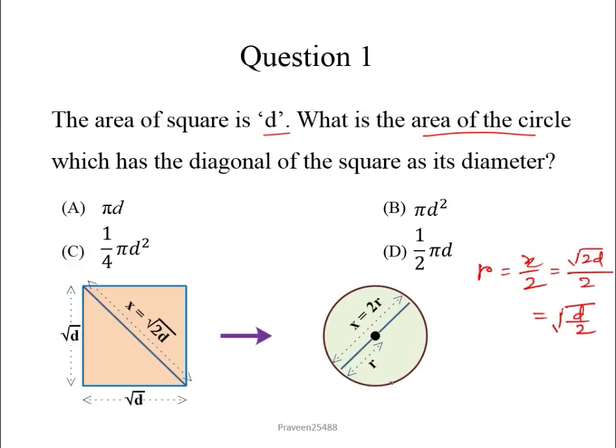It is asking the area of the circle. Area of circle is pi r squared. On putting the value of r here we can get our answer which is pi d upon 2. So here fourth is the correct option.